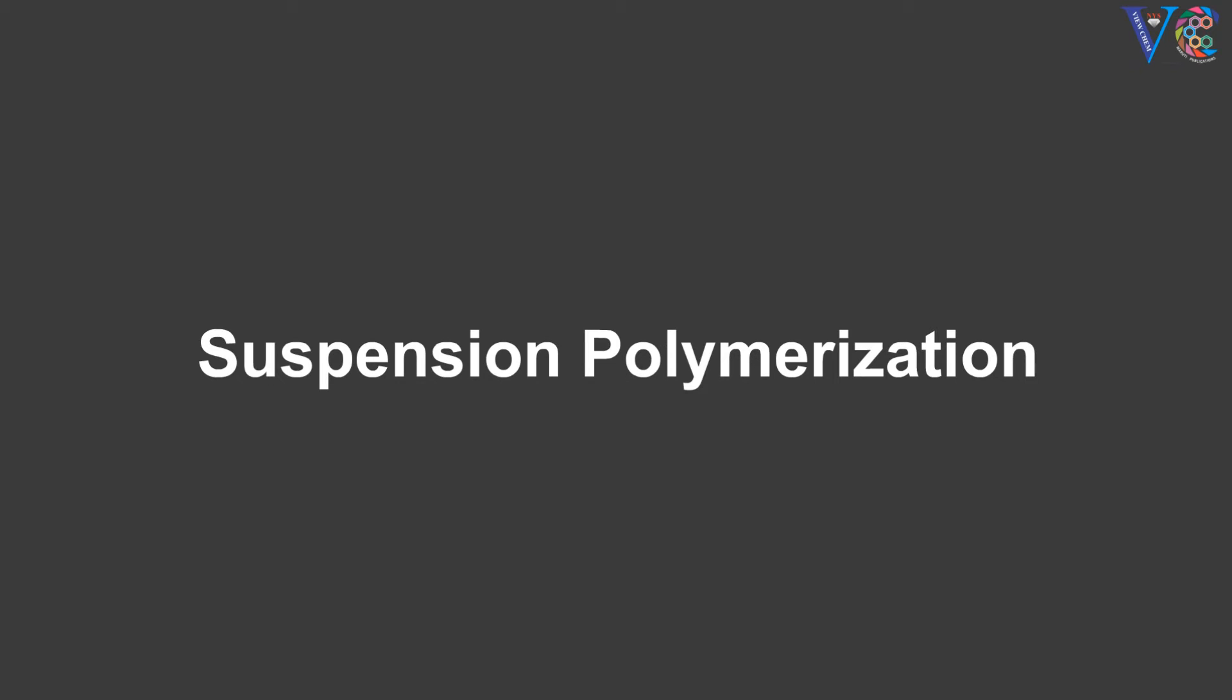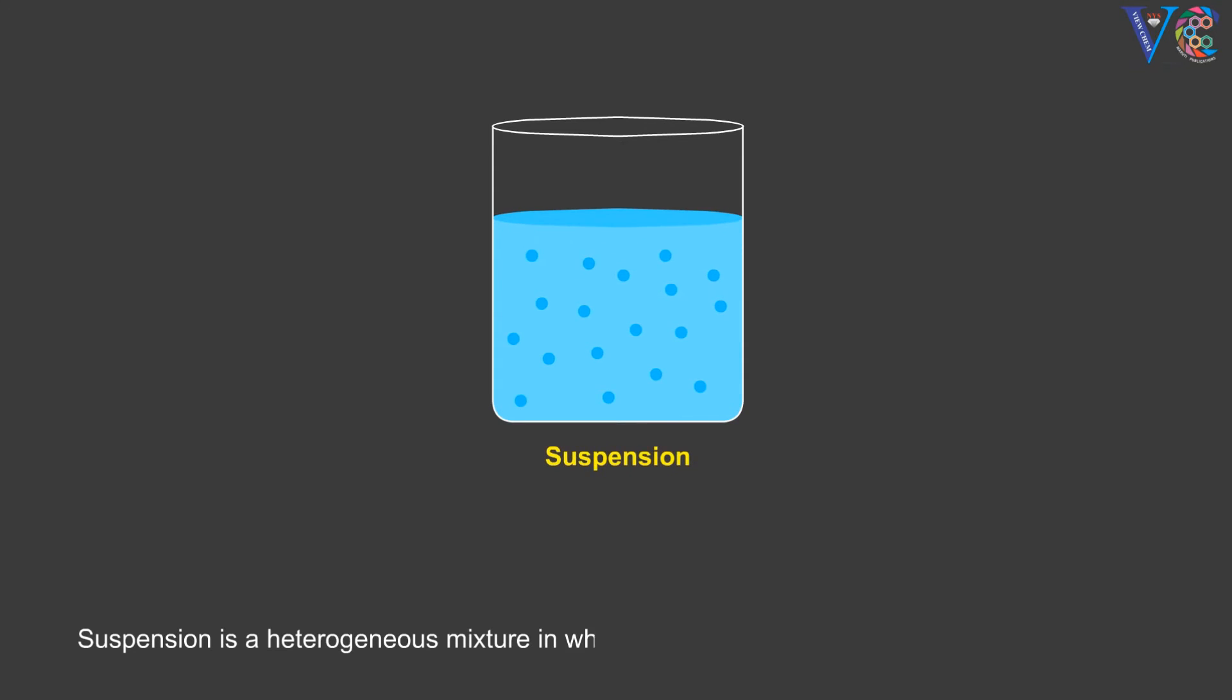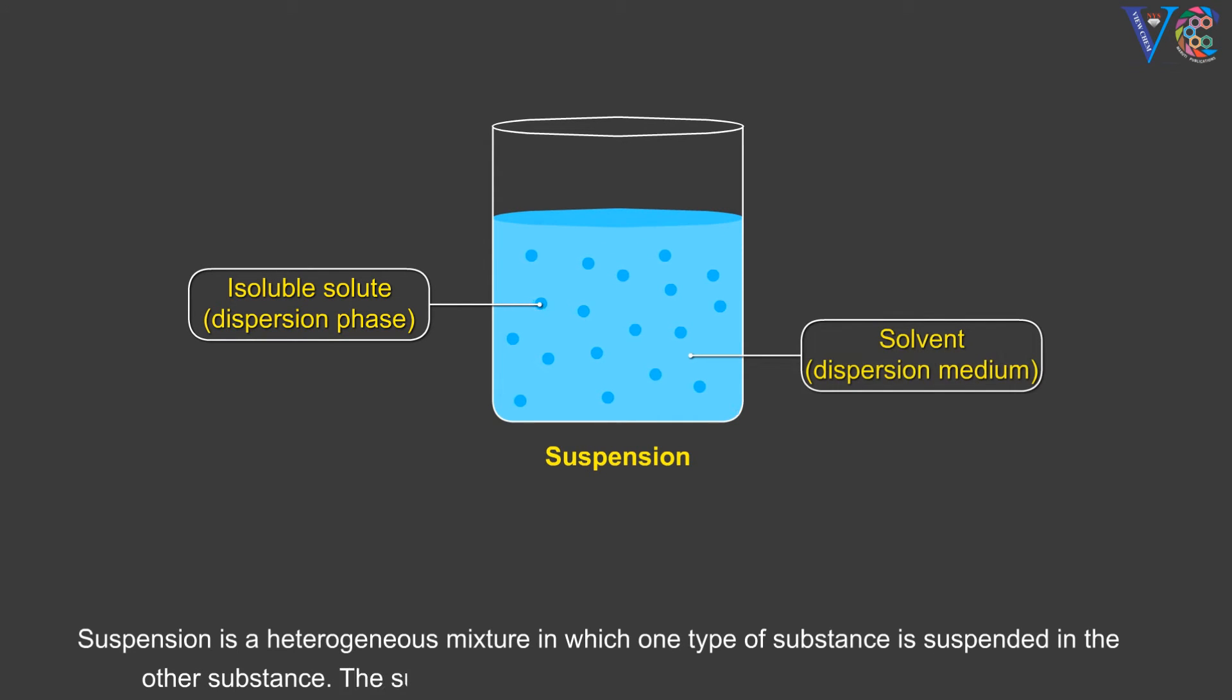Suspension polymerization. Suspension is a heterogeneous mixture in which one type of substance is suspended in the other substance. The suspended substance is large enough to be seen with the eye.